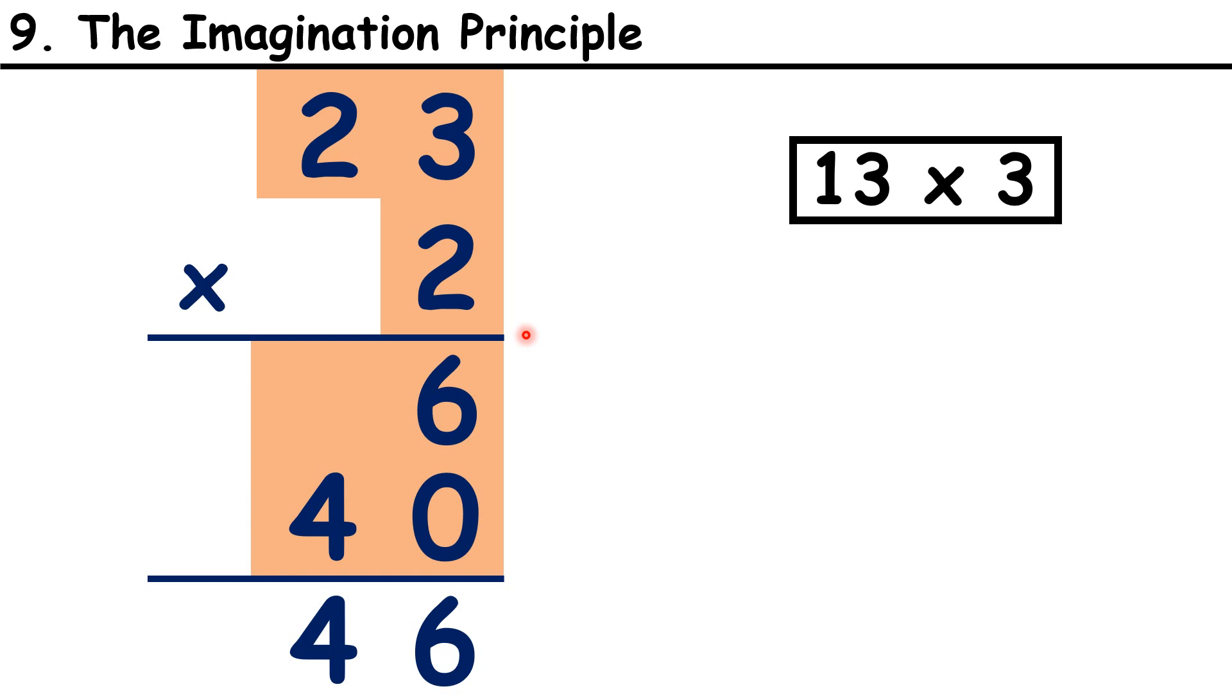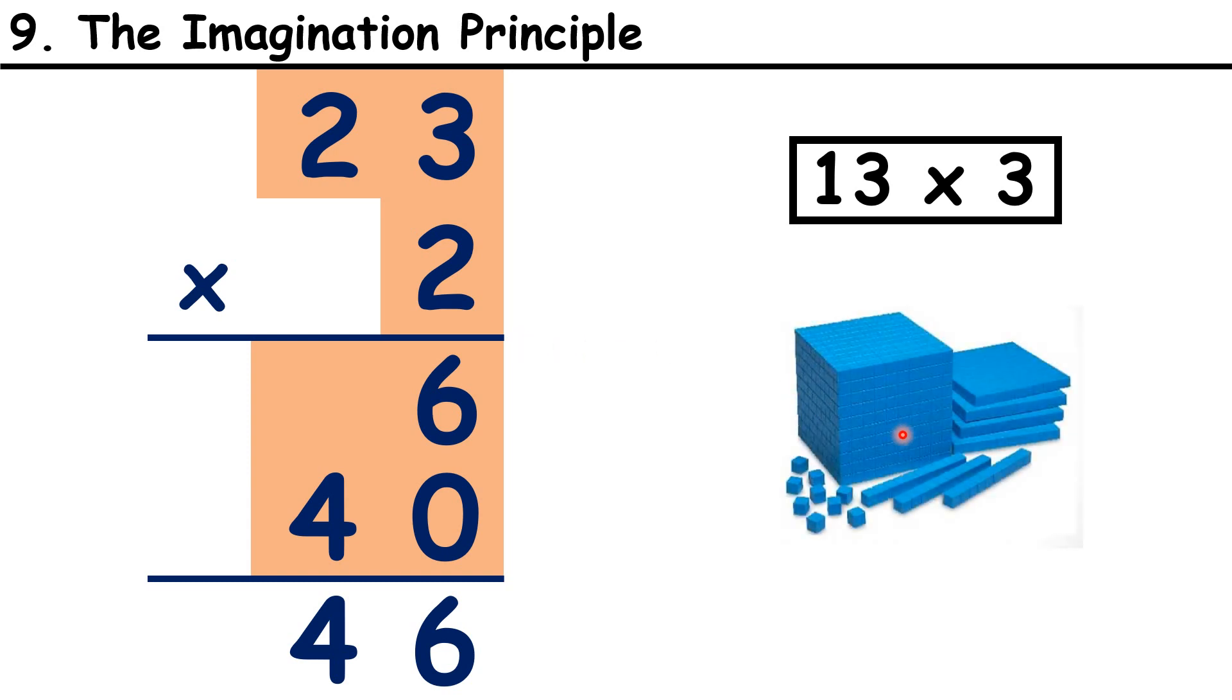At first, you might show a picture of what's happening on the board. Then, you might give the children some base 10 blocks, so that they can demonstrate their understanding. But once they've done that, give the children a different question and ask them to imagine what's happening with those base 10 blocks, before getting them to explain it verbally to each other. This will help the children commit what they've learned to long-term memory.